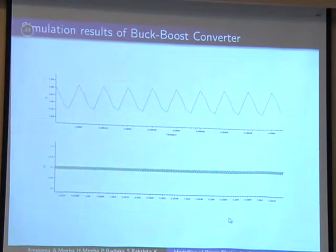The first one is the inductor current. Here also we can see that it is a continuous current, and below one is the voltage, output voltage. These ripples can be reduced by changing C and L values.